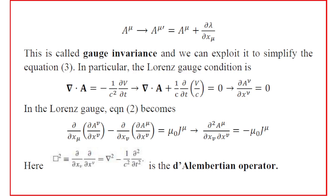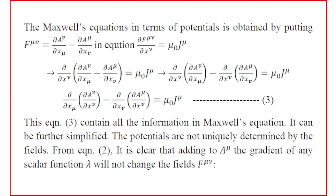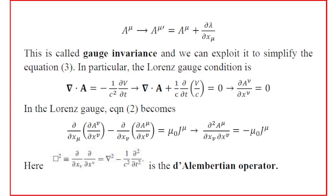With the Lorenz condition applied to equation 3, the term ∂/∂x^ν (∂A^ν/∂x^μ) becomes zero under the Lorenz condition. This leaves ∂²A^ν/(∂x_ν ∂x^ν) = −μ0 J^ν, where one index is covariant and one is contravariant.